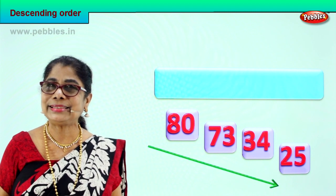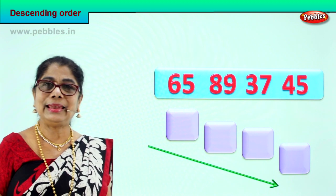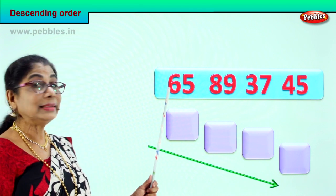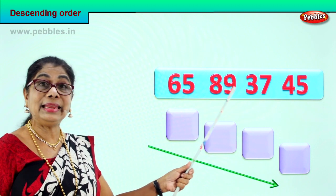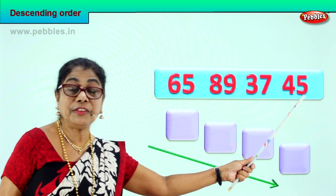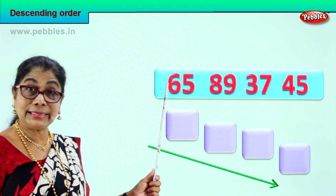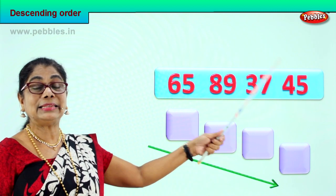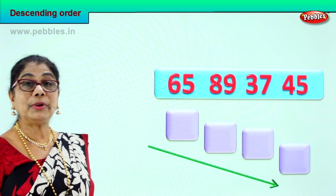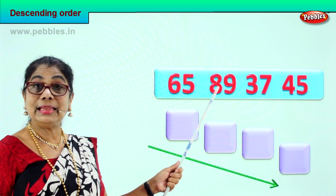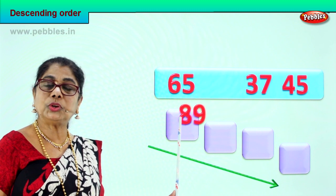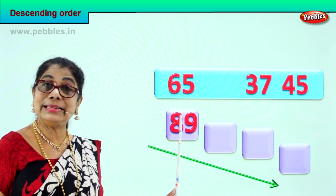Shall we go to our next exercise? Arrange the numbers again in descending order. Number by number we look at the tens place. Sixty-five: six tens. Eighty-nine: eight tens. Thirty-seven: three tens. Forty-five: four tens. So we have six tens, eight tens, three tens, and four tens. Among these, which number has the highest tens value? Eighty-nine — eight tens, nine ones — that's the biggest of the four, and we place it right on the top because we are arranging numbers in descending order.